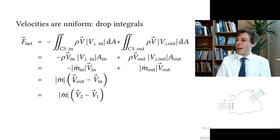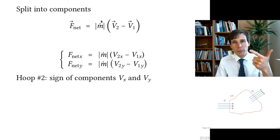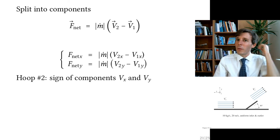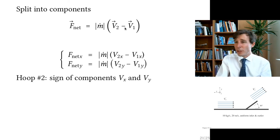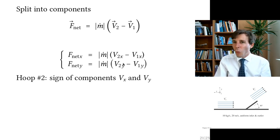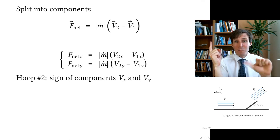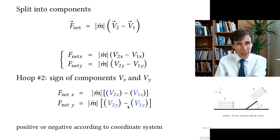F_net = ṁ(V2 − V1) is a vector equation — three scalar equations, one for x, one for y, one for z. In our problem we only have two dimensions: x horizontal and y vertical. I split into F_net_x and F_net_y, taking the x and y components of V2 and V1. The signs of V2x and V2y depend on the direction of V2 and the chosen coordinate system, so I need to look at the diagram carefully.